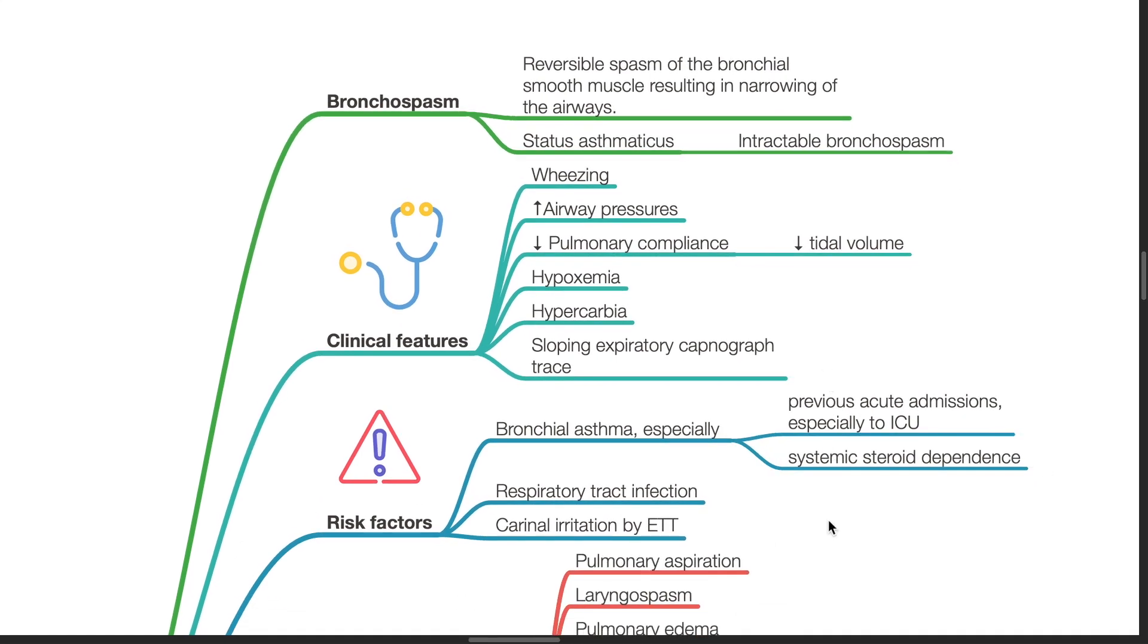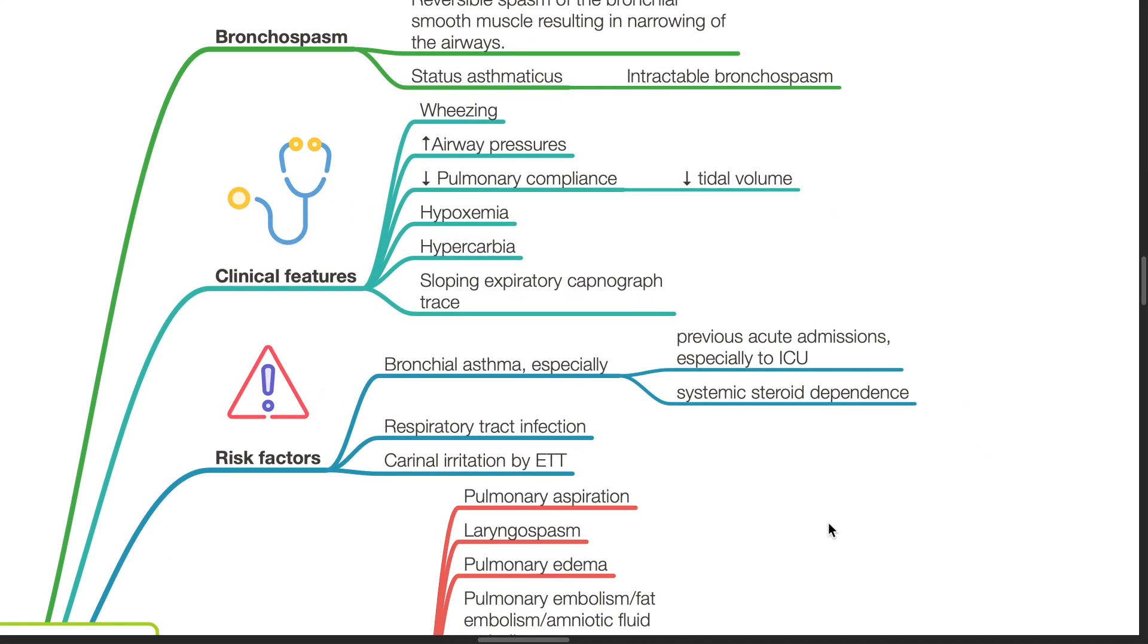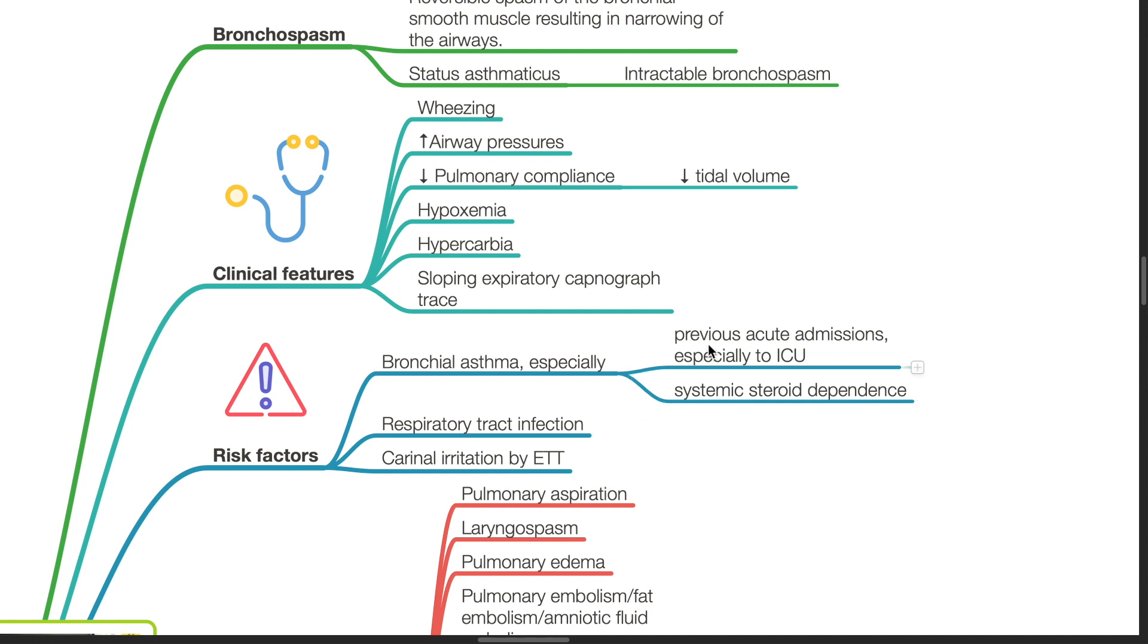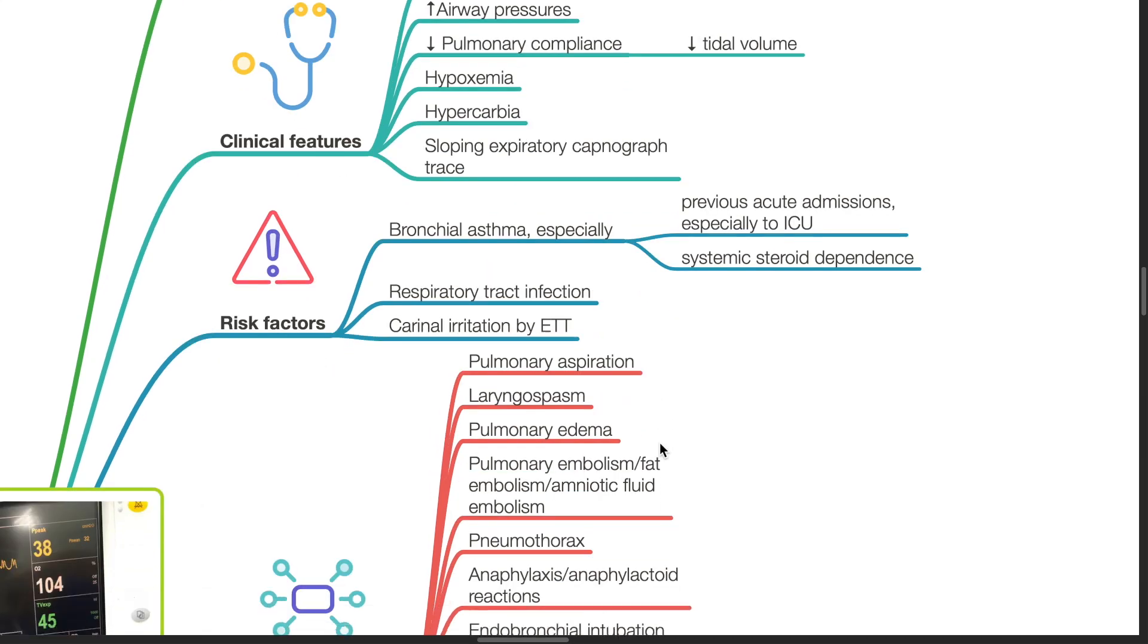Risk factors include bronchial asthma, especially if there are previous acute admissions to the ICU and systemic steroid dependence. Respiratory tract infection and carinal irritation by the endotracheal tube can cause bronchospasm.